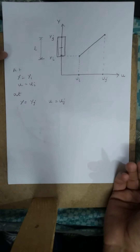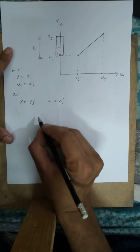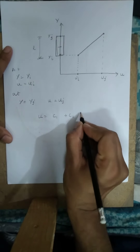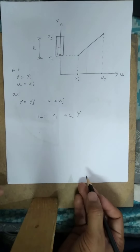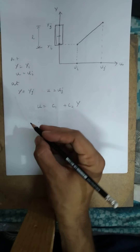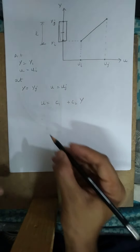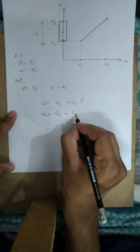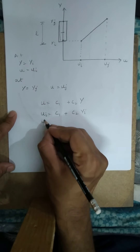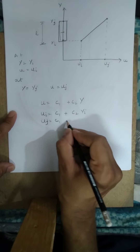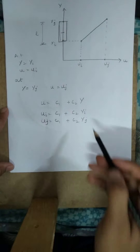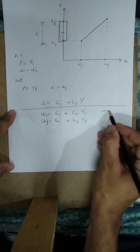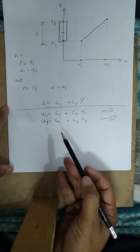Using the simple line equation — u equals c1 plus c2 times y — we substitute the node values: ui equals c1 plus c2 times yi, and uj equals c1 plus c2 times yj. By simultaneously solving these two equations, equation 1 and equation 2, we can obtain the values of the constants c1 and c2.